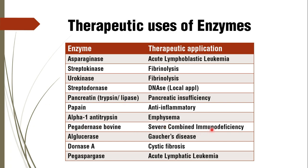For SCID, that is severe combined immunodeficiency, we give pegademase bovine as the enzyme treatment. For Gaucher's disease we give alglucerase, and for cystic fibrosis we give dornase alpha.